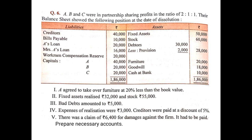The last item on the asset side is cash at bank. This is not transferred to the realization account. Rather, a separate bank account will be prepared. Since it is cash at bank — the amount lying in the bank account — you need to prepare the bank account. This 10,000, shown on the asset side, is a favorable debit balance. So it will be shown on the debit side of the bank account: to balance brought down 10,000.